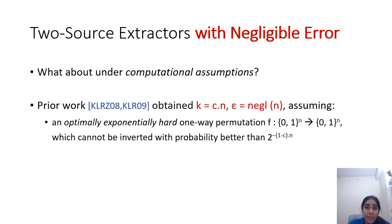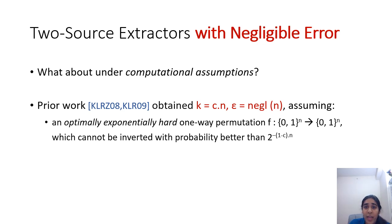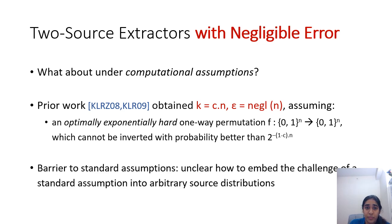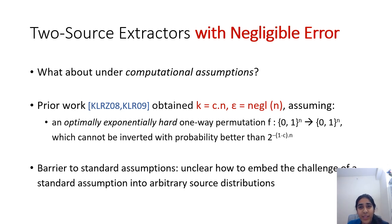Prior work has indicated that if the assumptions are sufficiently strong, then the answer is yes. In particular, assuming an optimally exponentially hard one-way permutation, prior work of Kalai et al. showed that one can obtain negligible error. But it's completely unclear whether such one-way permutations even exist, and we would like to rely on well-studied cryptographic hardness assumptions. When trying to relax assumptions, many known techniques hit a barrier: any reduction to an efficient challenger assumption would need to embed the challenge in the view provided to the adversary, which is the result of sampling from arbitrary source distributions and applying an extractor — making it completely unclear how to embed an external challenge.